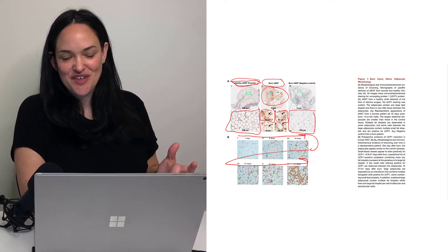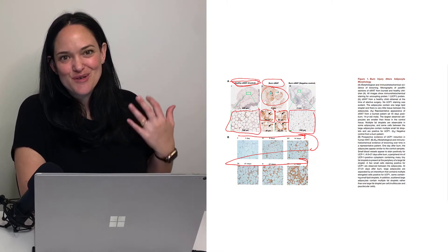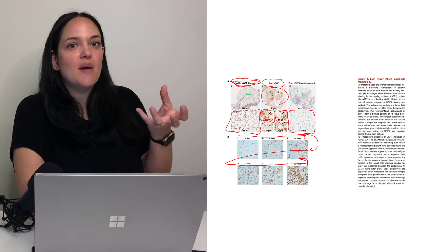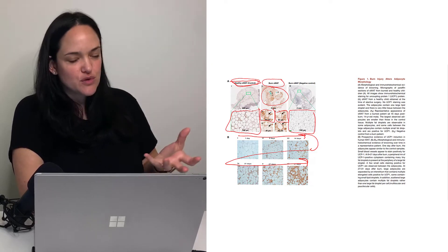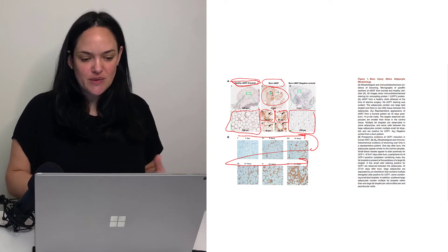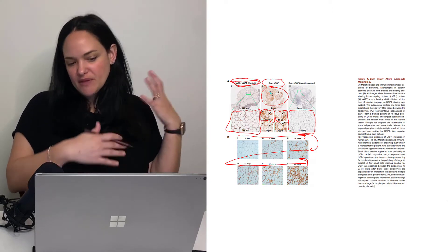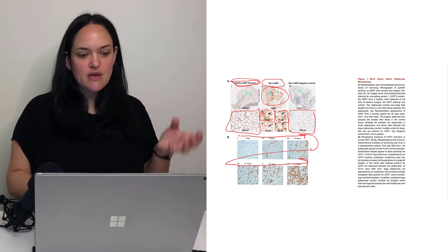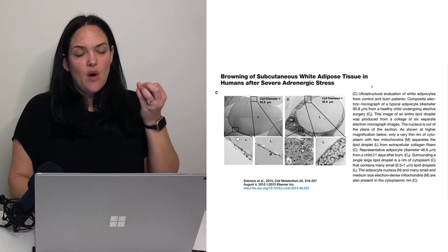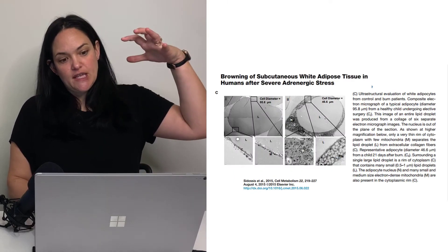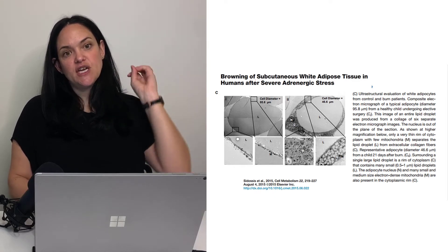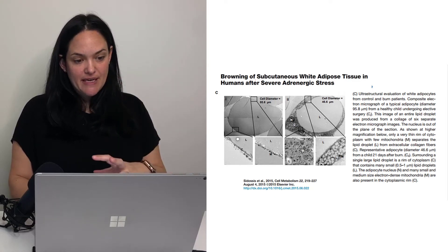Just for the record, they didn't burn these victims in order to induce the browning of fat — they used a population that had gone through burns for other reasons and did these studies in a burn unit. The main concept here is we do see the browning of fat in these individuals, and we see it at both low magnification and high magnification.